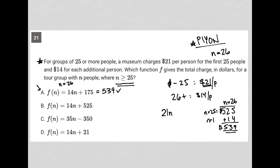Choice B, well, this can't be correct, because we start off with the same 14n, but we're adding a much larger number here. So that cannot equal $539. So that's gone. Choice C, let's see, 35 times 26 is 910 minus 350 is 560. So that's not $539 as well. And choice D, 14n plus 21. Again, can't be correct because we know 14n plus 175 is correct. So choice D is gone.